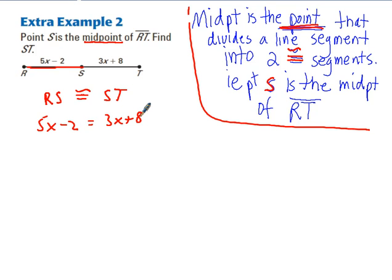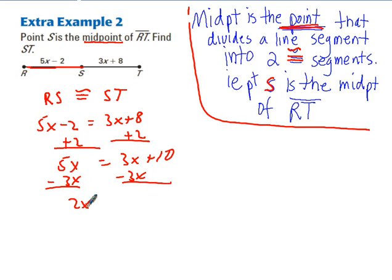And now we can use some Algebra 1 here and go ahead and solve. So I'll add 2 to both sides. That gives me 5x is equal to 3x plus 10. Now we can subtract 3x. Gives me 2x is equal to 10. Divide by 2 now to solve for x. And we get x is equal to 5.